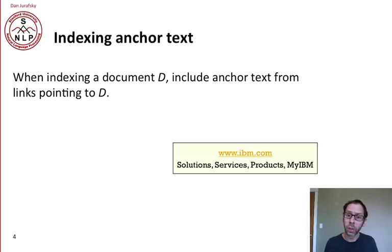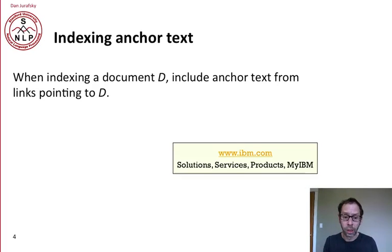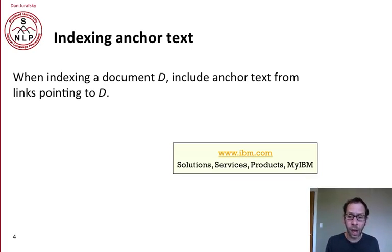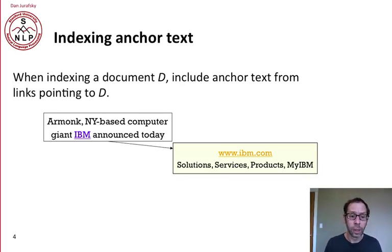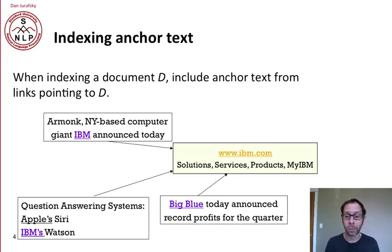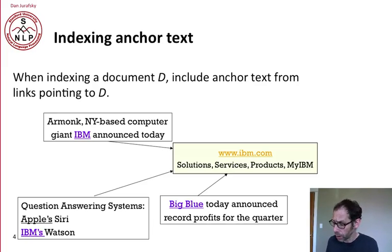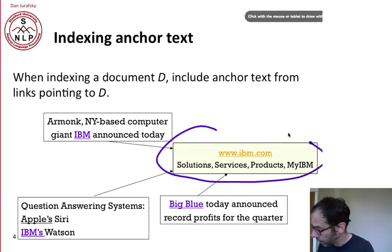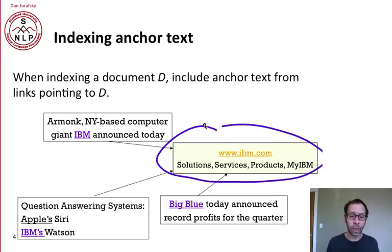When indexing a document, we include the anchor text from all links pointing to that document in the index for that document. So for our IBM page, www.ibm.com, we have one link that calls it 'IBM', another that refers to it as 'IBM's', and another that says 'big blue'. We add all of these into the index for this webpage, this URL, this document — and that gives us a lot of information about this page.